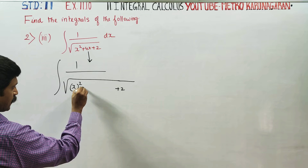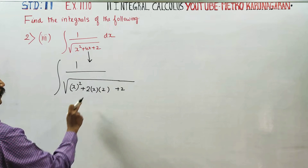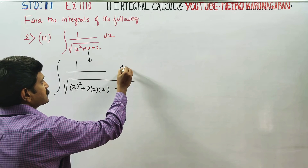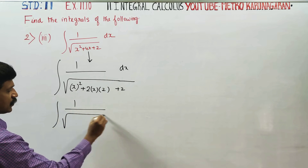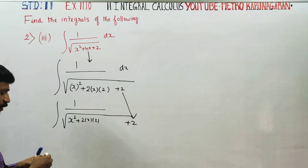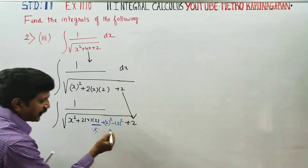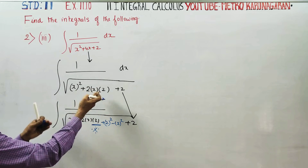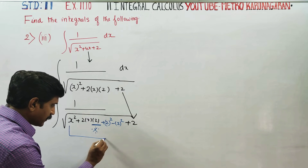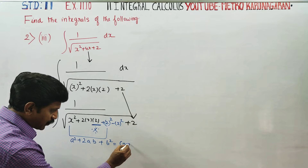We will use 2 tables. First, expand where 2 tables: 4 equals 2 times 2, and 4x equals 2 into x into 2. The value is given dx. Next stage: 1 by square root of x squared plus 2 into x into 2.